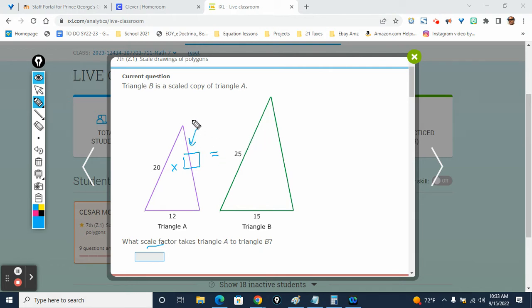That box right there, that whatever we multiply by is going to be the scale factor. So we're going to make an equation. 20x equals 25. What do we do next? Divide both sides by 20. x equals 25/20. We're going to simplify and divide. What can divide into 20 and 25? 5. So 25 divided by 5 is... 20 divided by 5 is... x equals 5/4.